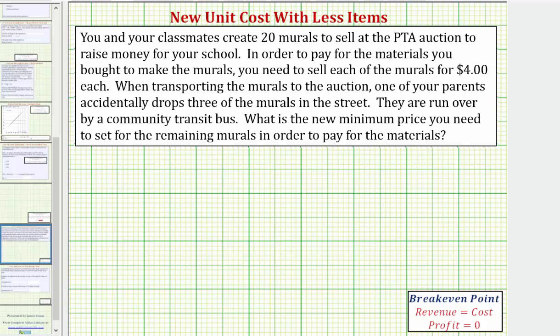When transporting the murals to the auction, one of your parents accidentally drops three of the murals in the street, and they are run over by a community transit bus. What is the new minimum price that you need to set for the remaining murals in order to pay for the materials?